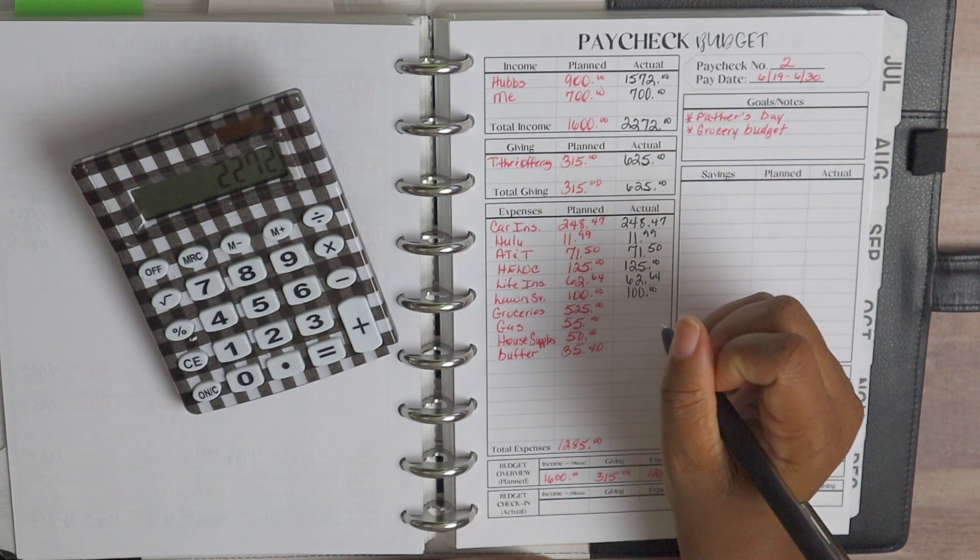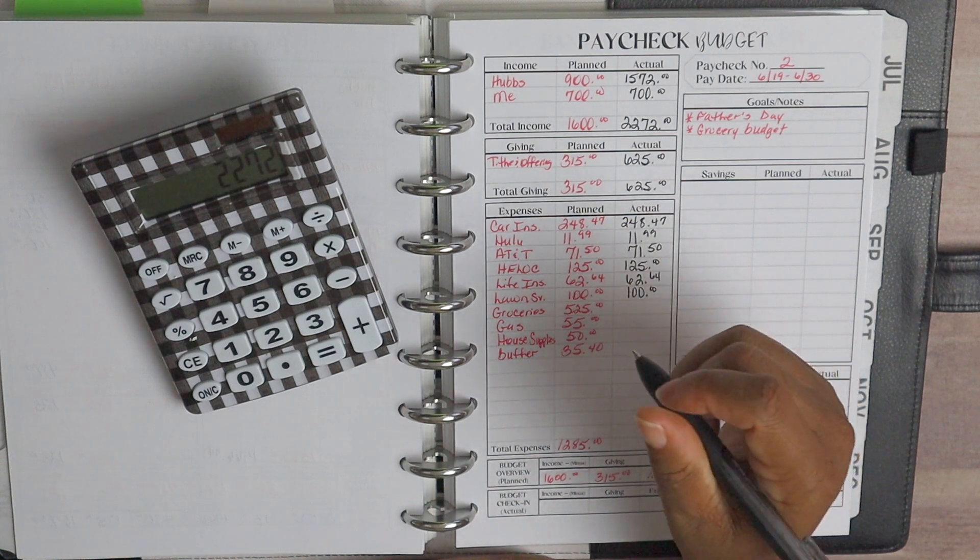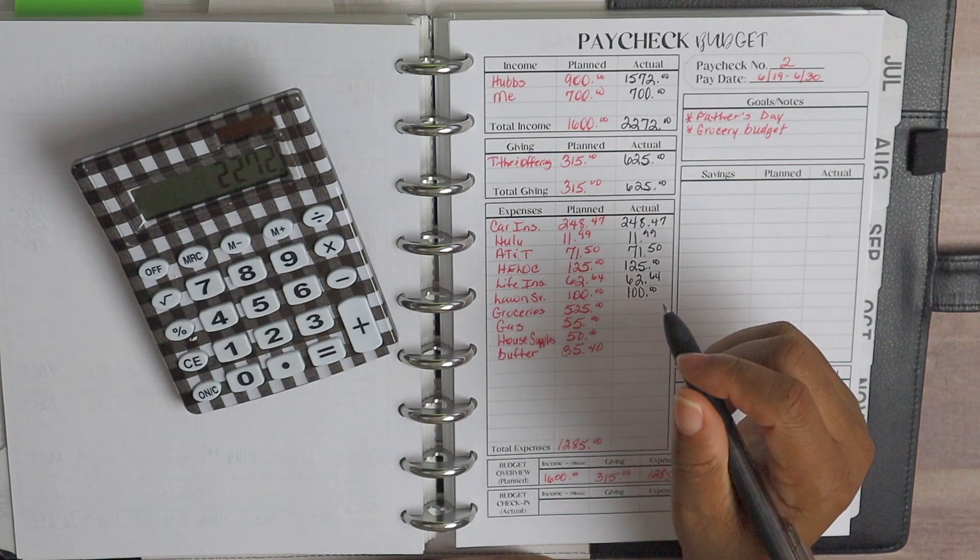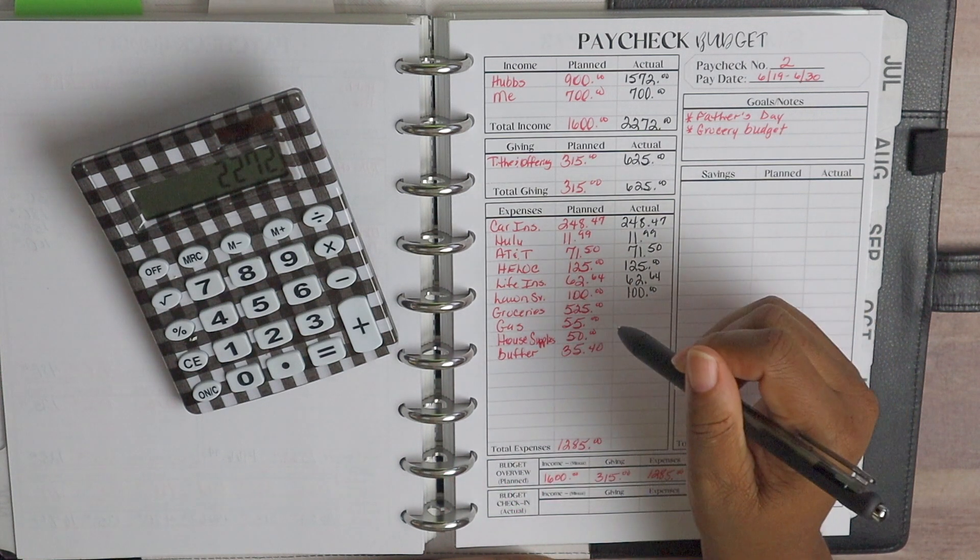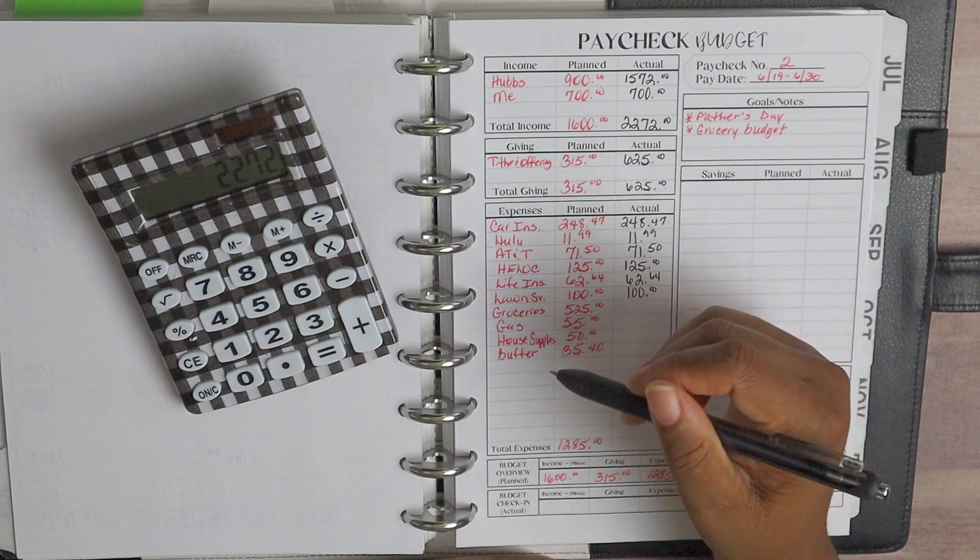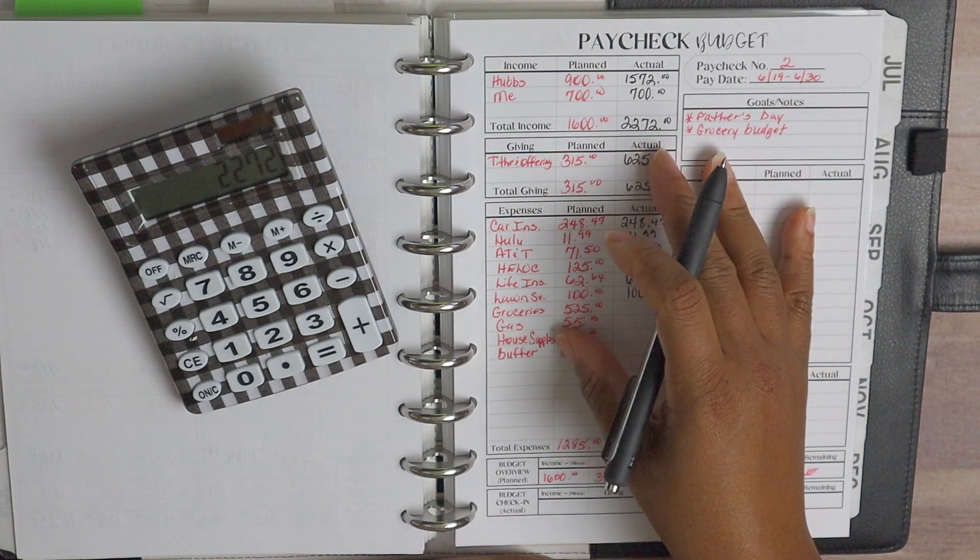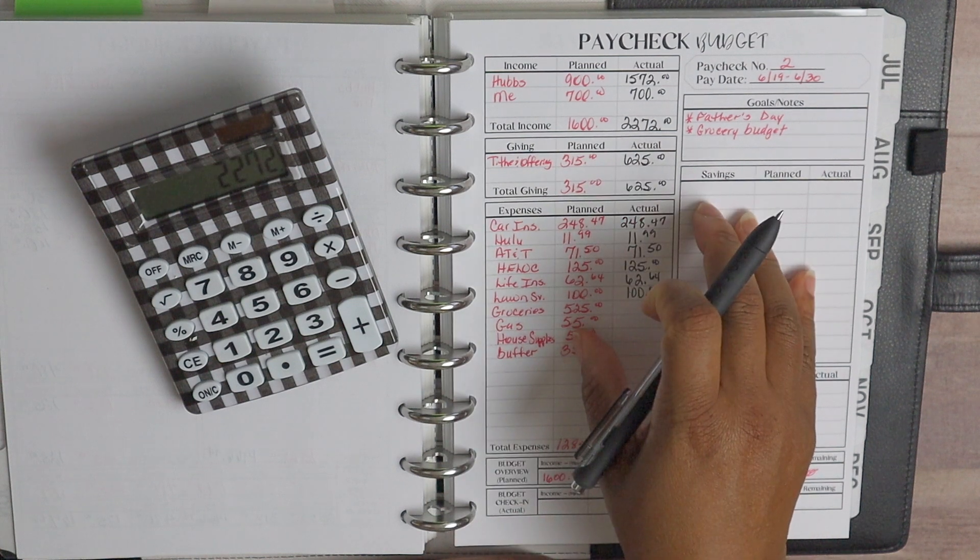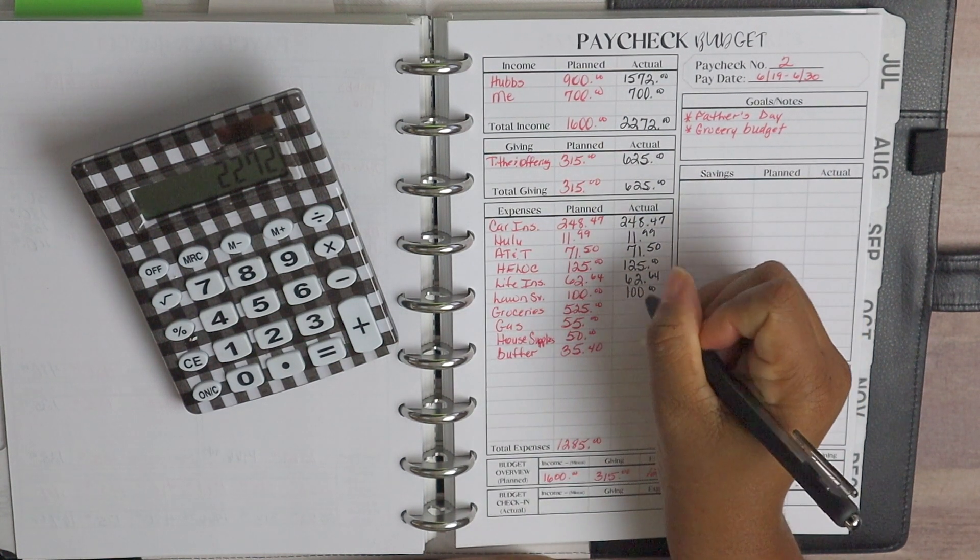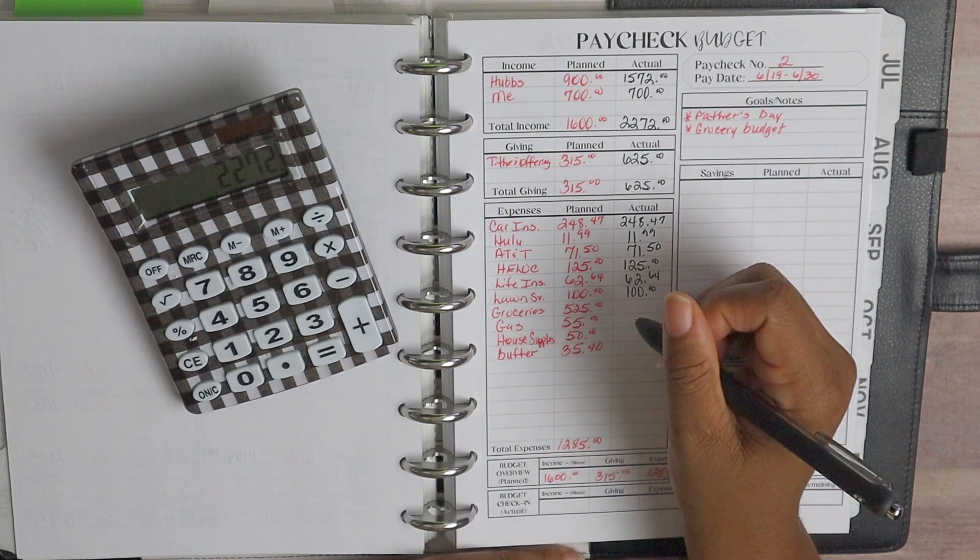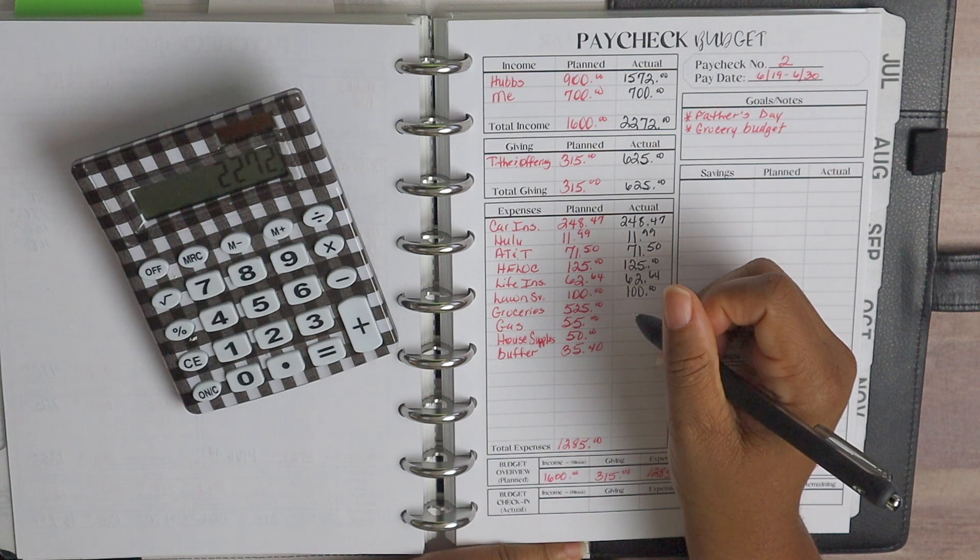And now guys, our groceries. Now I did start back to work going to the location physically and I had to get groceries of course, and then I also compensated for the extra paycheck that hubs had for this month of June. But for this particular paycheck guys, we were over and you guys know I don't like being over. So this is kind of like an adjustment. Some of the food, it should carry over for next month.